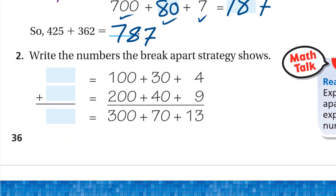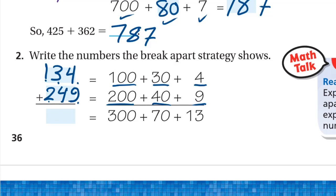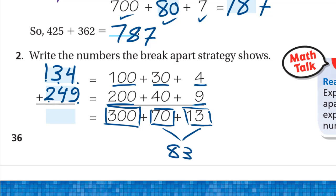Number 2: write the numbers the break apart strategy shows. We have 134, broken into 100, 30, and 4. And 249, broken into 200, 40, and 9. Adding the parts: ones: 4 plus 9 is 13; tens: 30 plus 40 is 70; hundreds: 100 plus 200 is 300. So 13 plus 70 is 83, plus 300 is 383.